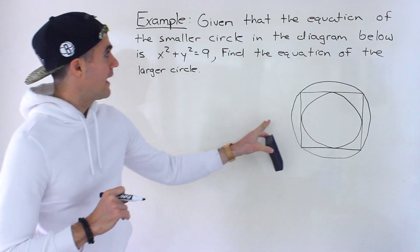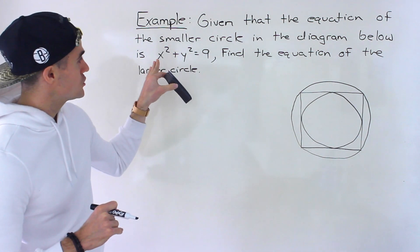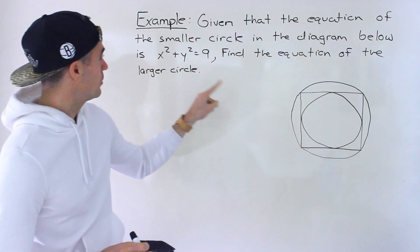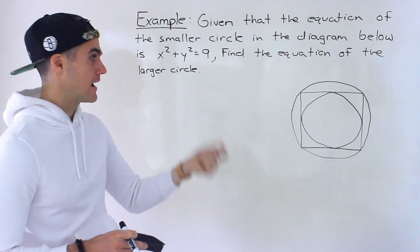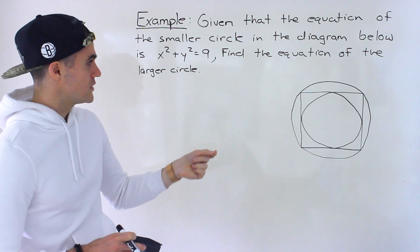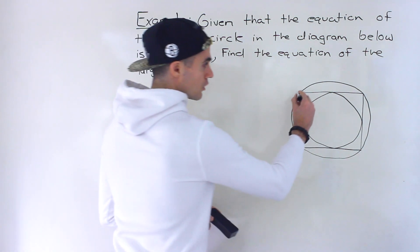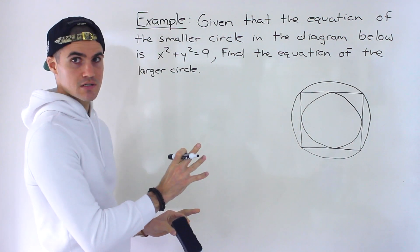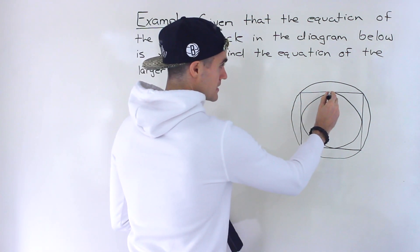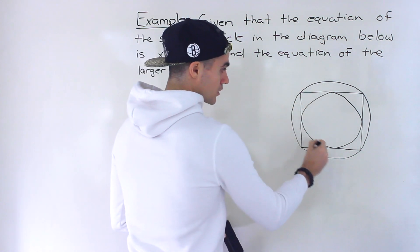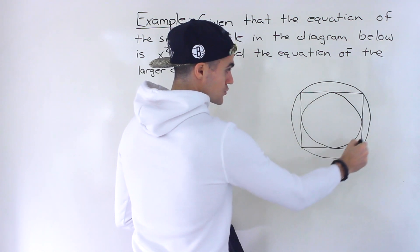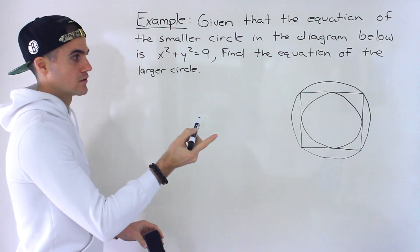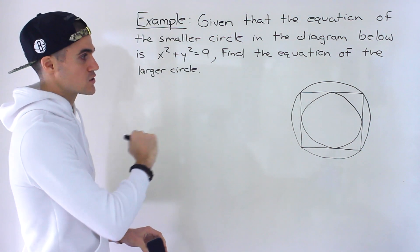We're given this diagram here, and given that the equation of the smaller circle is x squared plus y squared equals 9, we have to find the equation of the larger circle. Notice that we actually have three shapes we're dealing with: the smaller circle, the larger circle, and then this shape in between — and that shape is actually a square, which I'm going to explain in a sec.